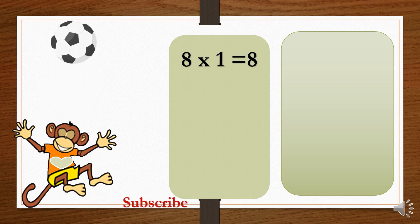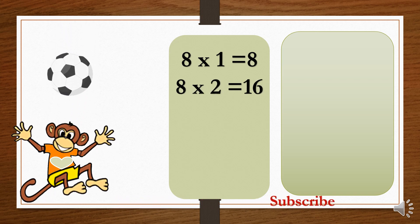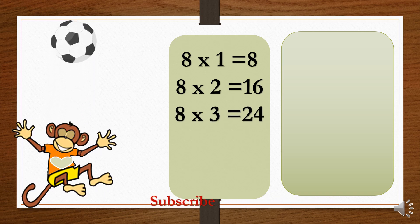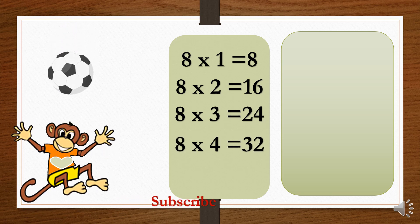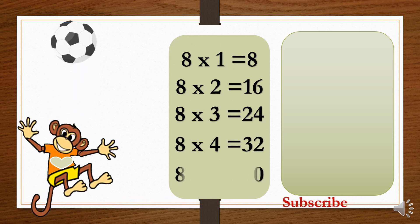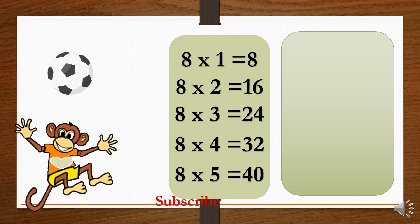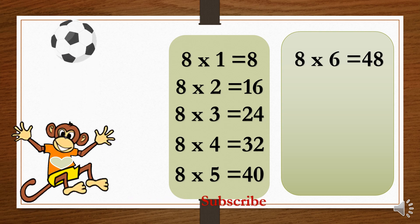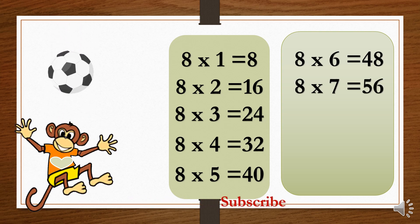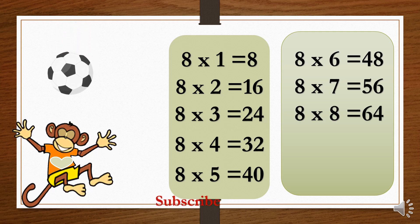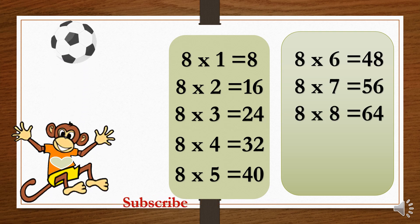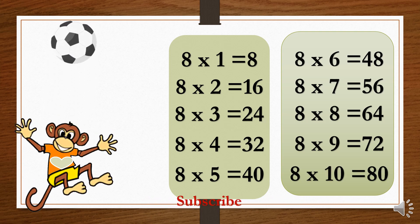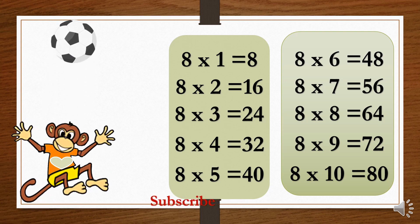8×1=8. 8×2=16. 8×3=24. 8×4=32. 8×5=40. 8×6=48. 8×7=56. 8×8=64. 8×9=72. 8×10=80.